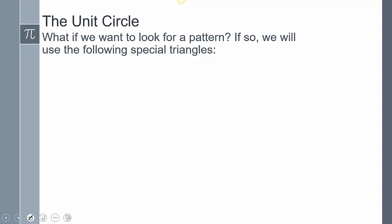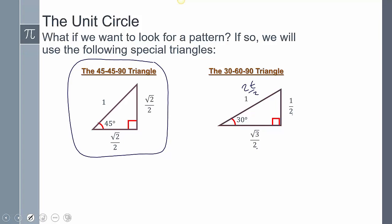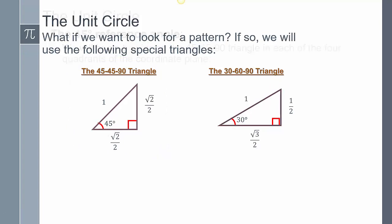Now we're going to piece that together and construct the unit circle using our 30-60-90 and 45-45-90 triangles. For the 30-60-90 triangle, since the sides are 1, √3, and 2, if I divide everything by 2 to make the radius 1, I get sides of 1/2, √3/2, and 1. That gives us our coordinate values.